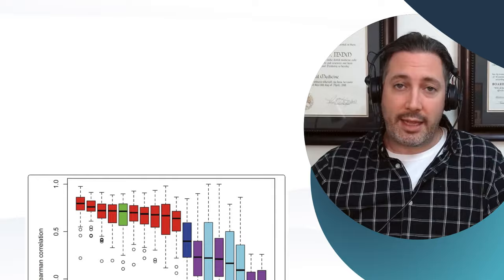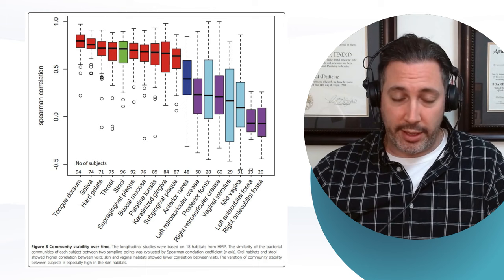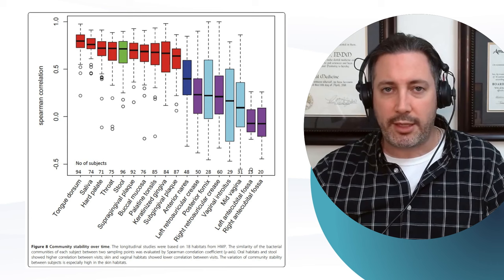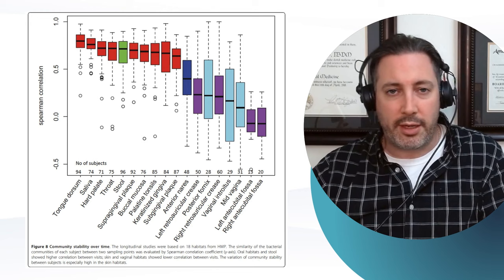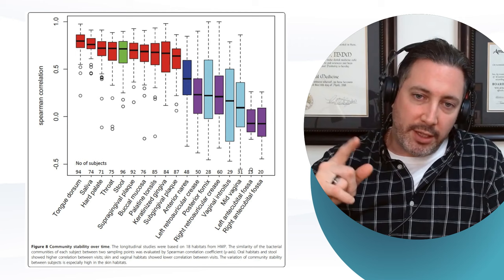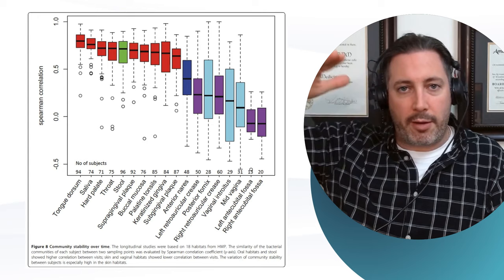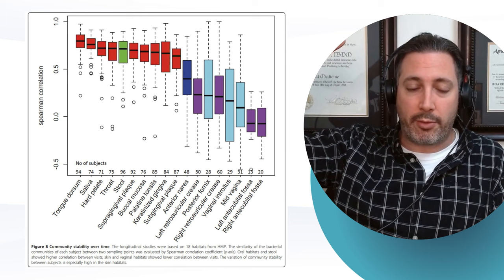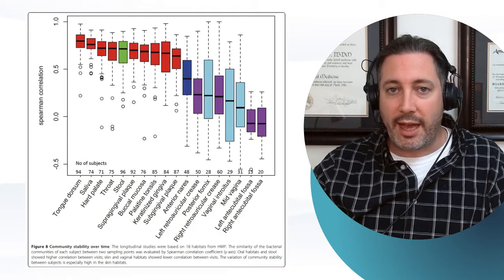Looking at this graph, the tongue dorsum is actually quite stable, which is fantastic because we rely on the tongue dorsum microbiome for making essential nutrients like nitric oxide — the conversion of nitrates into nitrites and their passage to the rest of the body. Saliva, the hard palate, throat, supragingival plaque, and buccal mucosa all show high Spearman correlation, meaning they have very important stability. The higher the Spearman correlation, the more stable the area. This applies to all the different niches of the oral cavity — great news for studying the mouth microbiome with confidence.